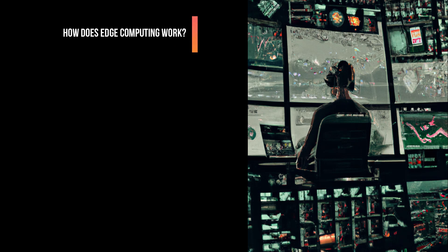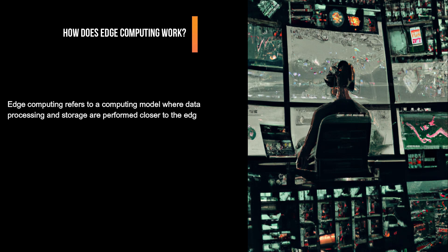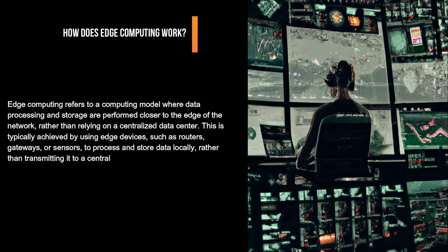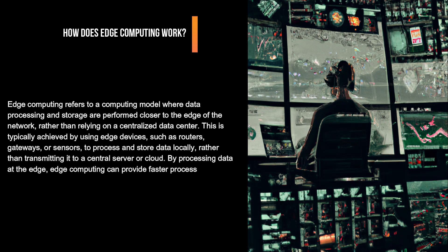How does edge computing work? Edge computing refers to a computing model where data processing and storage are performed closer to the edge of the network, rather than relying on a centralized data center. This is typically achieved by using edge devices, such as routers, gateways, or sensors, to process and store data locally, rather than transmitting it to a central server or cloud. By processing data at the edge, edge computing can provide faster processing times, reduced latency, improved reliability, and increased security.